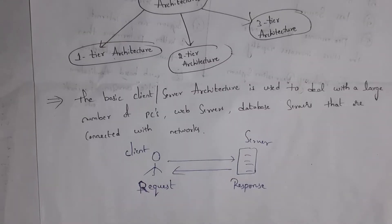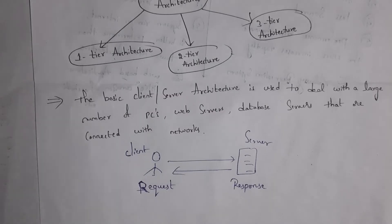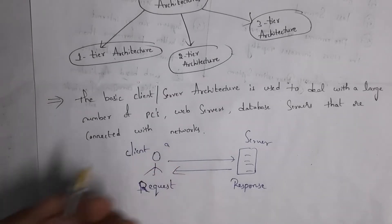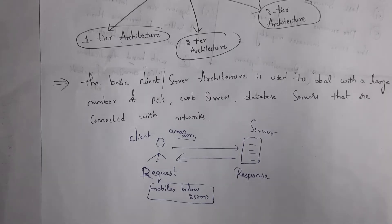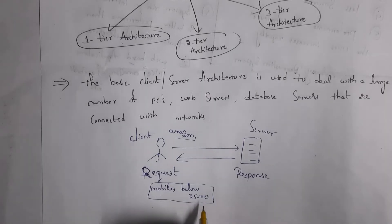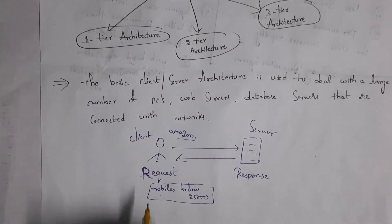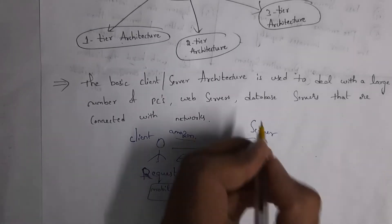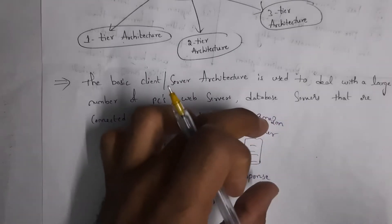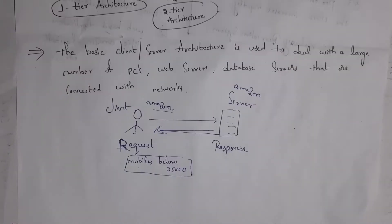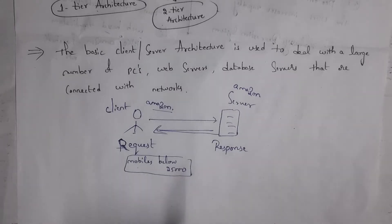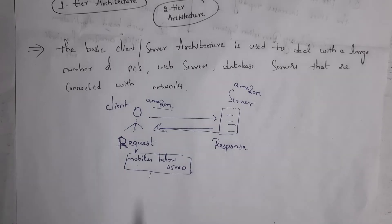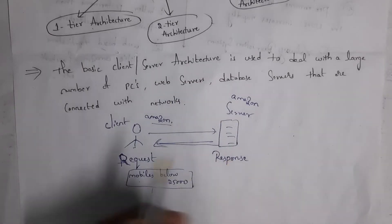The person who sends a request is known as the client, and the server gives a response to them. For example, if I open the Amazon website to purchase a mobile and type 'mobiles below 25,000', my request is transferred to the Amazon server. This Amazon server contains information about all products and will display all mobiles below 25,000. Here, I am sending the request, so I am the client.